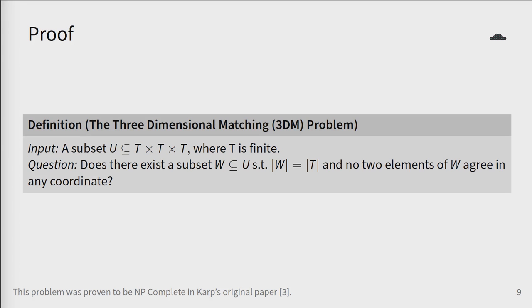We define the three-dimensional matching problem as follows. We have a set T, which is finite. We take the three-dimensional product of T given by T times T times T, or T^3, and we're also given a subset U of this three-dimensional space. The question to be decided is whether there exists a subset of U called W, which has the same size as T, and no two elements of W agree in any coordinate. This problem was one of the original problems in Karp's famous paper on NP-completeness.